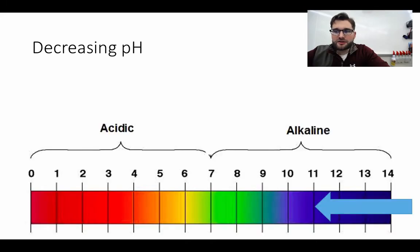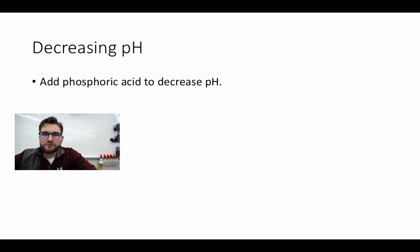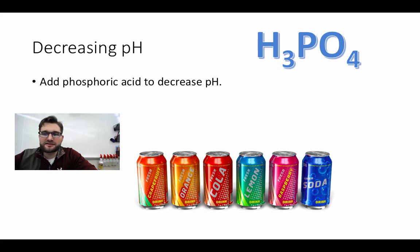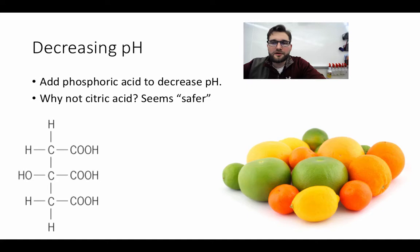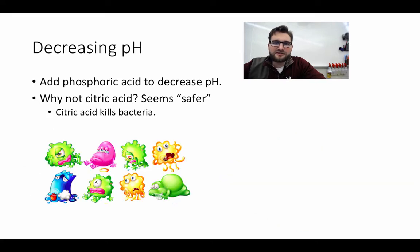In order to decrease the pH if we need to do that in the future, we're going to add phosphoric acid, which will decrease the overall pH in our system. Phosphoric acid is the same stuff you would find inside many colas. So why wouldn't we use citric acid? You would think citric acid would be safer for a system like this, but citric acid actually kills bacteria — and we want those bacteria in our system. The bacteria promote the movement of the nitrogen cycle, taking ammonia, converting it to nitrite, and converting that to nitrate. Without bacteria, the nitrogen cycle is not going to function correctly.